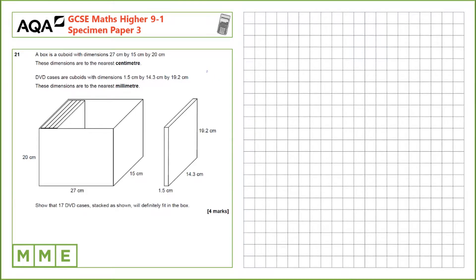Question 21. A box is a cuboid with dimensions 27 by 15 by 20. The dimensions are correct to the nearest centimetre. DVD cases are also cuboids with dimensions 1.5 by 14.3 by 19.2 which are correct to the nearest millimetre. Show that 17 DVD cases stacked as shown will definitely fit in the box.